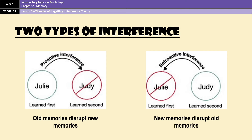Conversely, retroactive interference is when new information disrupts the recall of old information. For example, a teacher forgetting the names of old students when new students come in. It's always good to have an example on hand for these two types of interference, because you may need to flesh out an exam question, get asked for one specifically, or identify what proactive and retroactive interference is in a scenario. Having a ready-made example will help — use mine, your textbook's, or think of your own.